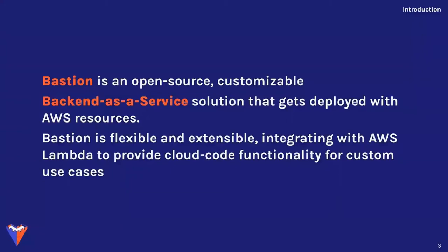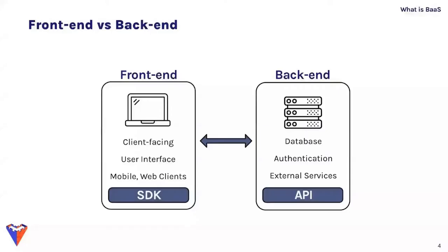Bastion is an open-source, customizable backend as a service solution that gets deployed with AWS resources. Bastion is flexible and extensible, integrating with AWS Lambda to provide cloud code functionality for custom use cases. Basically, Bastion is a pre-built backend that front-end developers can use for their application so they don't have to spend time building their own backend, letting them get their product to market faster.